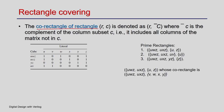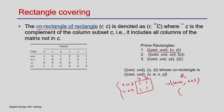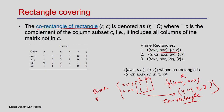For each prime rectangle we define a core rectangle: it has the same rows but the columns are those NOT present in the prime rectangle. For the prime rectangle with rows uwz, uxz and columns u, z — the core rectangle has the same rows and columns v, w, x, y — the complement of the prime rectangle's columns.